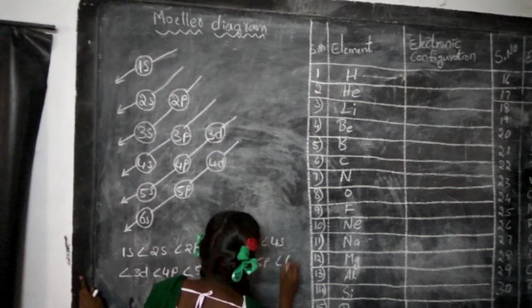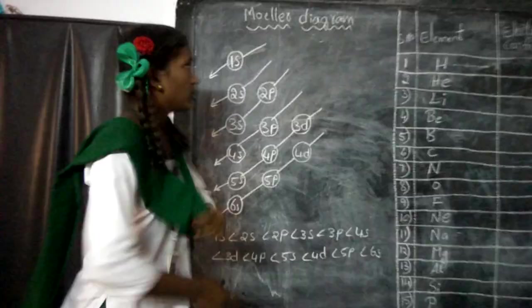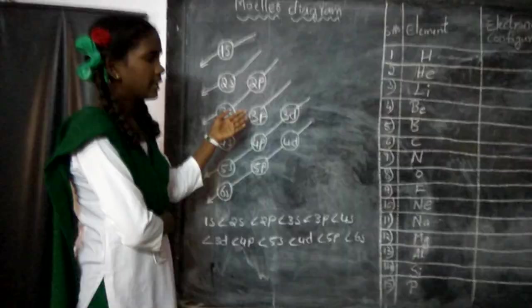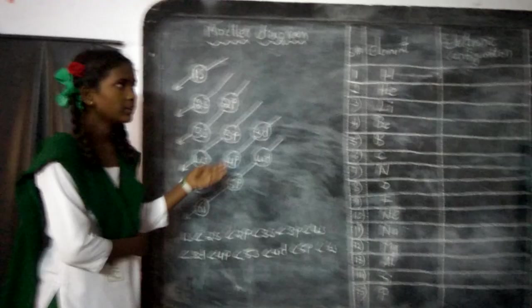6B, 3D, 4D, 5D, 6D, 7D, 8D, 10D, 11D, 12. By using this Moeller diagram, now I am writing configurations of 30 elements.